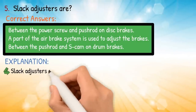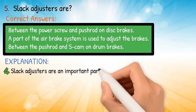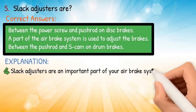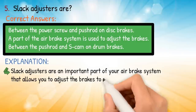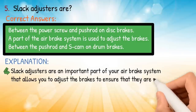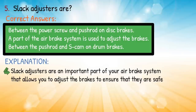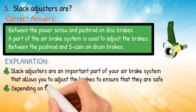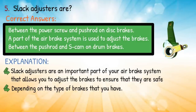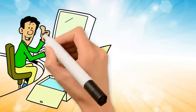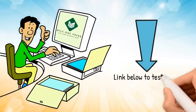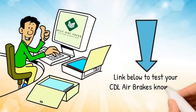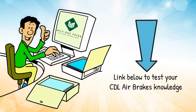Explanation: slack adjusters are an important part of your air brake system that allow you to adjust the brakes to ensure that they are safe. They are located in different places depending on the type of brakes that you have. Feel free to take a free sample test in the link below to test your CDL air brakes knowledge.